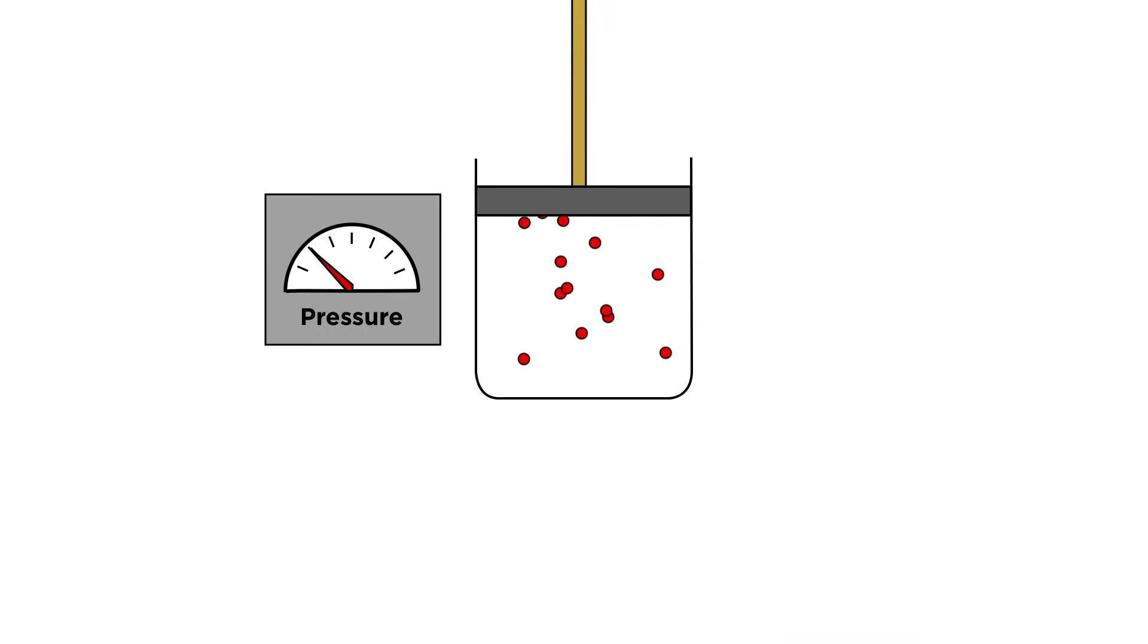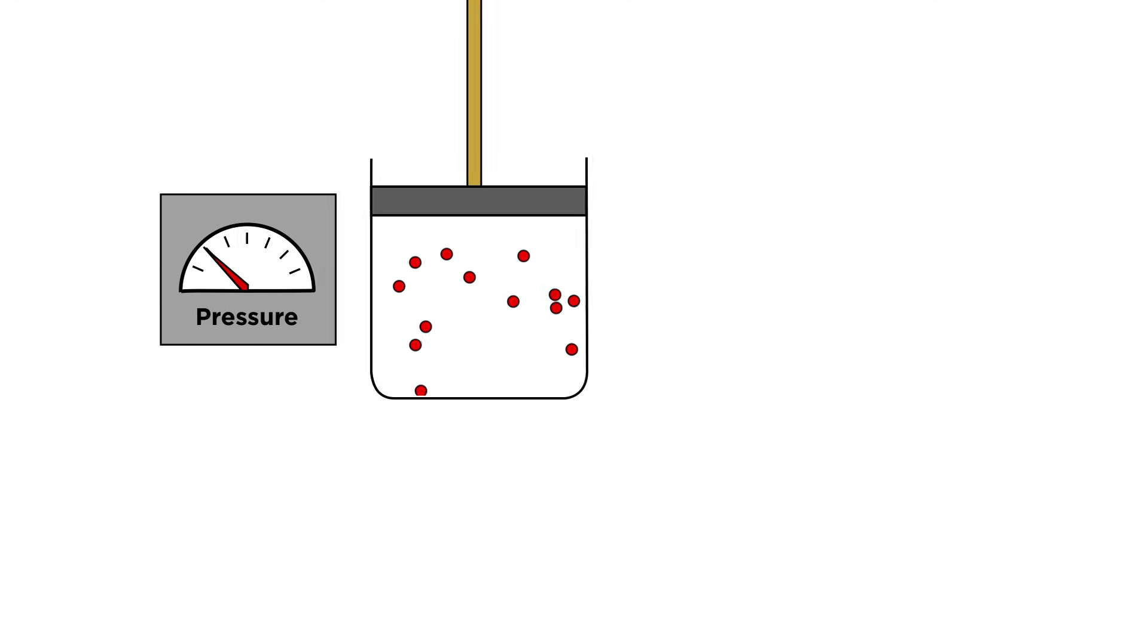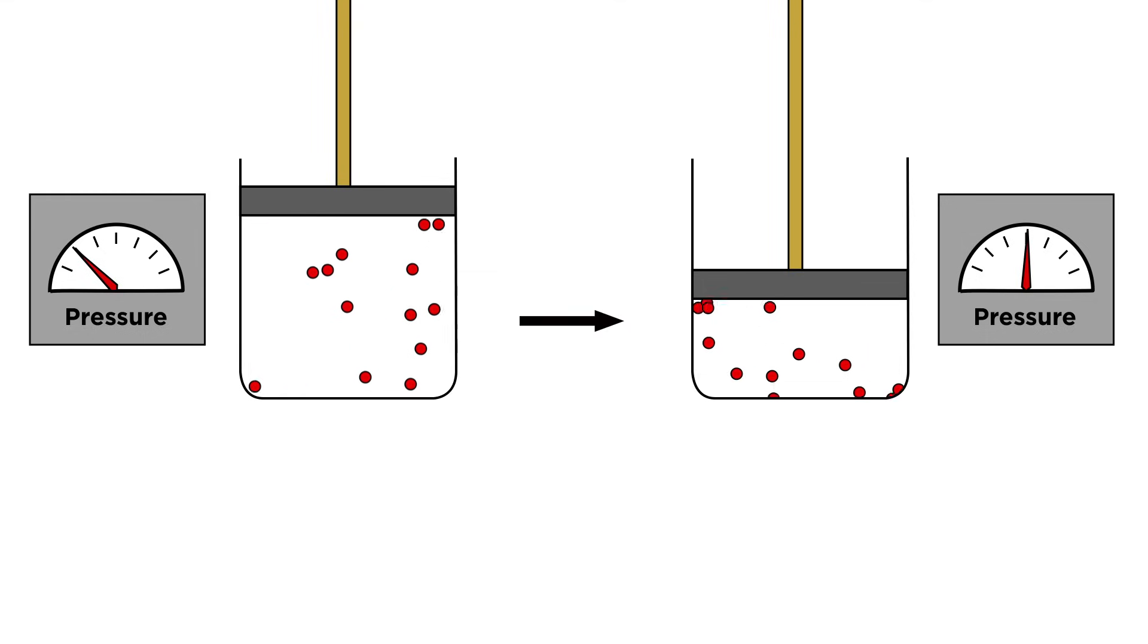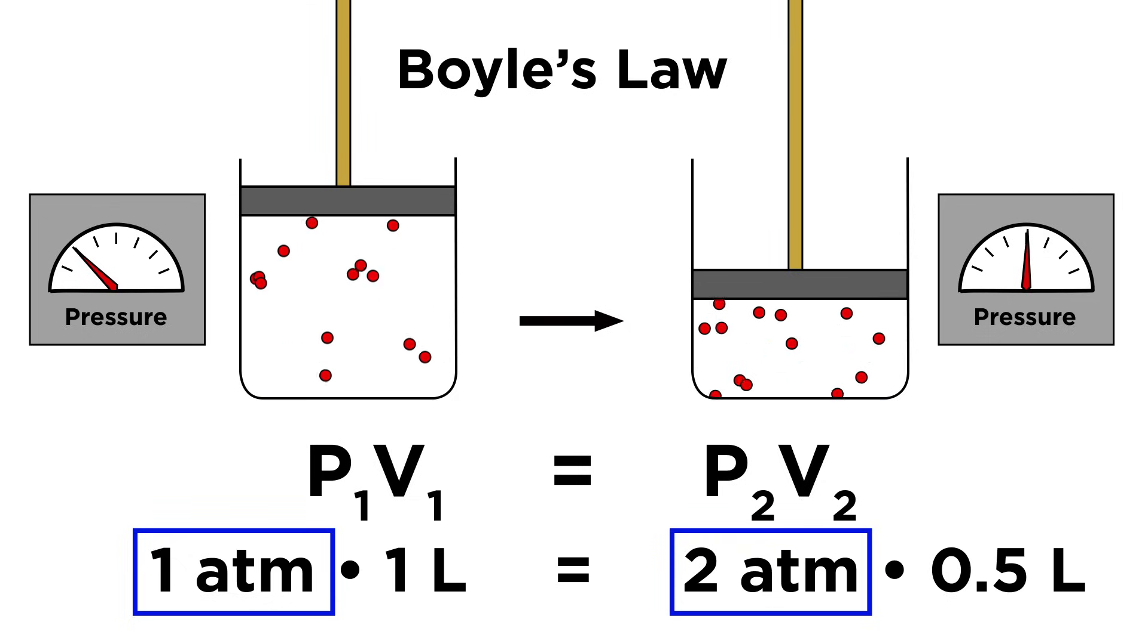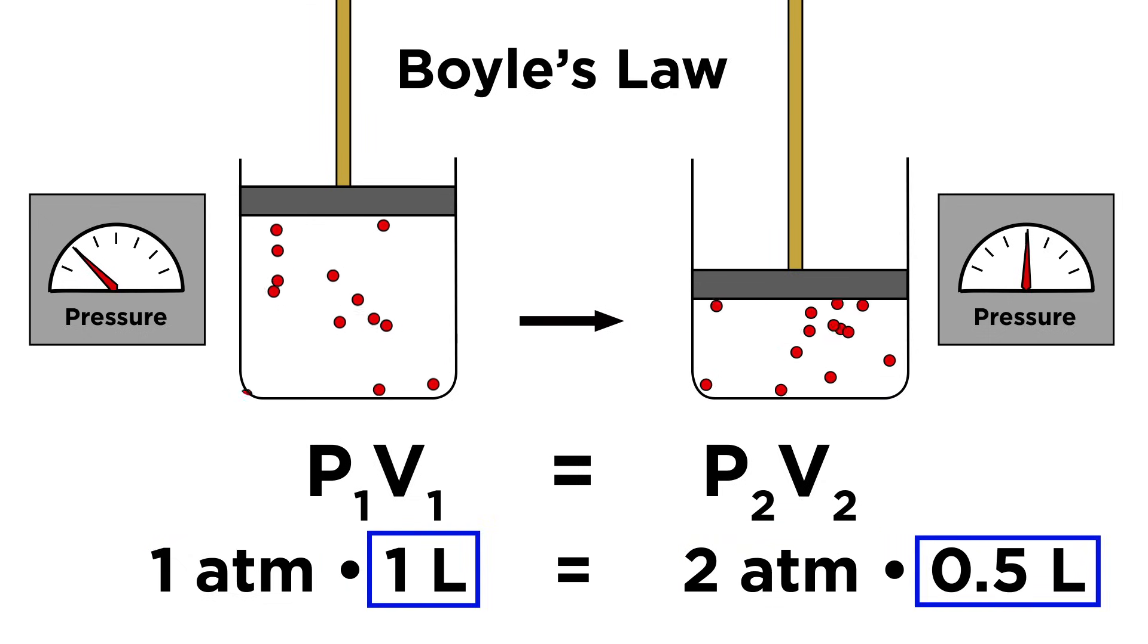Let's look at a piston. While keeping the moles and temperature the same, in other words the same number of particles moving at the same speed, if we compress the volume, the pressure must go up. The particles will be hitting the sides more often because there is less distance to travel to hit a side. That means that pressure and volume are inversely proportional. If one goes down, the other goes up. This is expressed in Boyle's law. P1V1 equals P2V2. If we double one variable, we have to cut the other one in half in order to keep this equation valid.